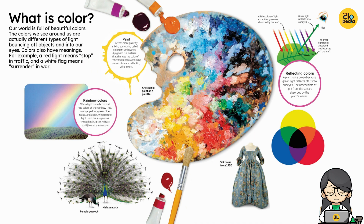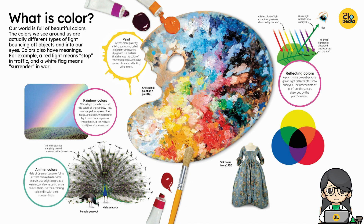White light is made from all the colors of the rainbow: red, orange, yellow, green, blue, indigo, and violet. When white light from the sun passes through rain, it can refract — or split — to make a rainbow.